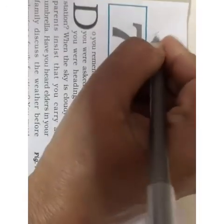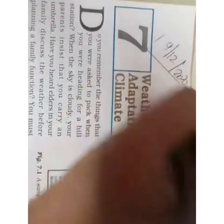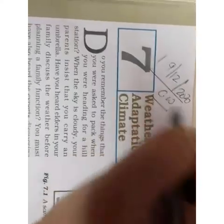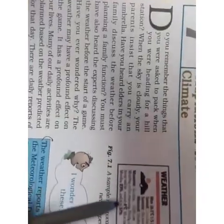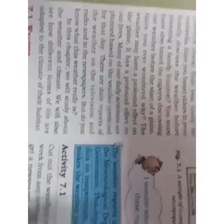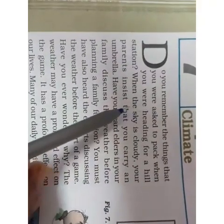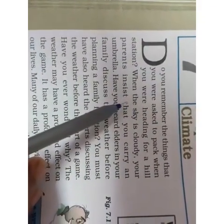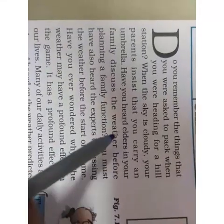We'll write today's date: 19/12/2020 and CW. The lesson is 'Weather, Climate and Adaptations.' First, we are going to study about the weather changes — what is the weather and what is climate. We need to understand that first, and then we'll go into the adaptations of the animals.